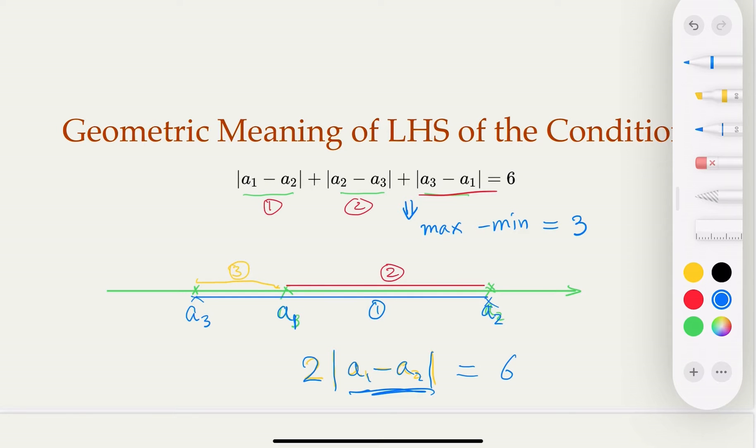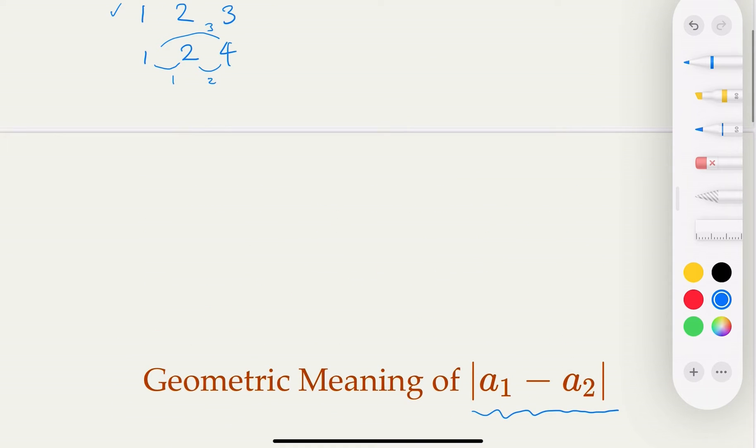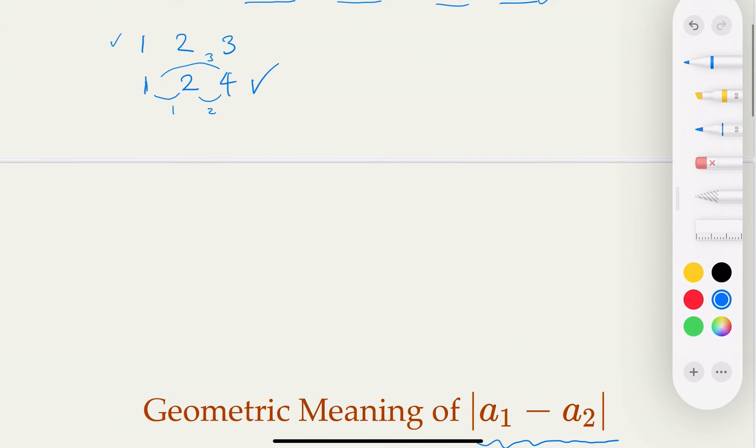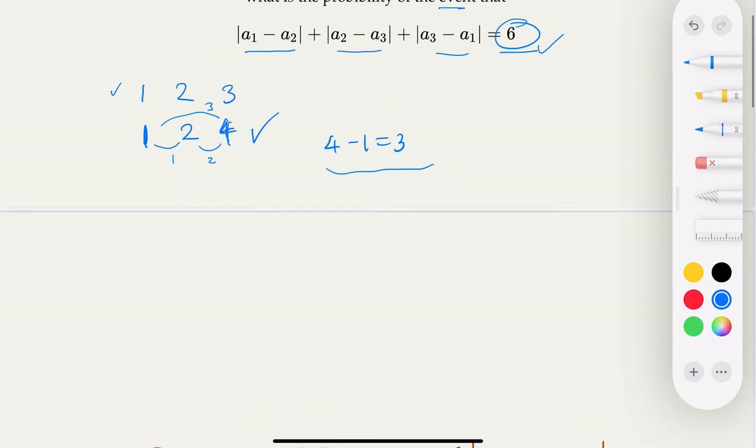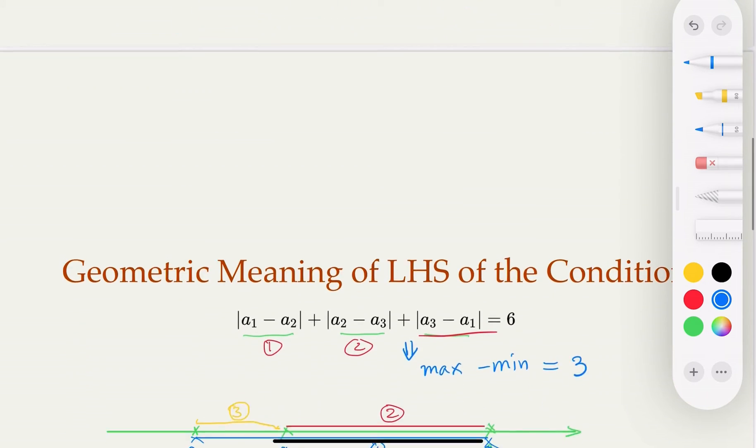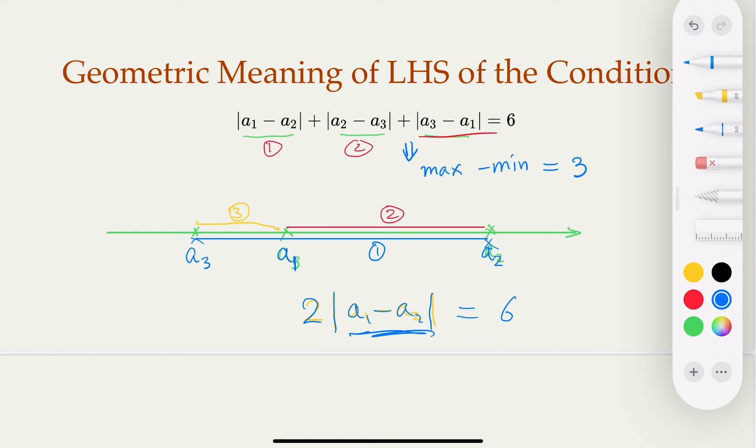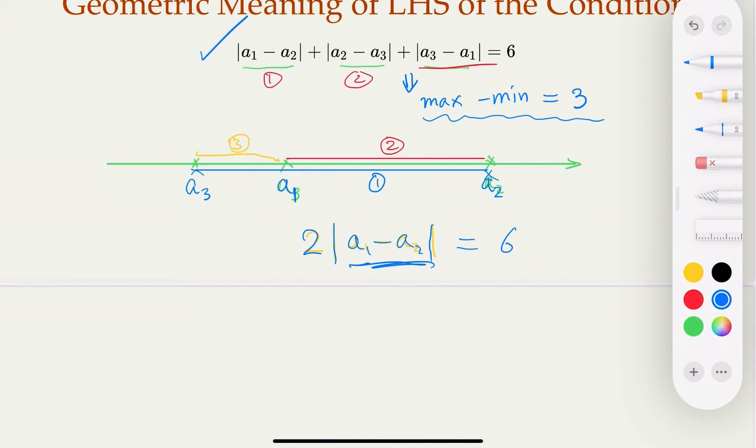So what we get is for this condition, we know that the max and the min of the three numbers, the difference would be three. So in other words, earlier we said if you throw one, two, four, the distance happens to be six because the smallest is one, the biggest is four. Four minus one equals three. You can try out with any other combinations.